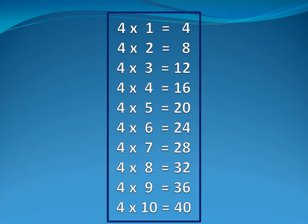Four five is twenty. Four six is twenty-four. Four seven is twenty-eight. Four eight is thirty-two. Four nine is thirty-six.